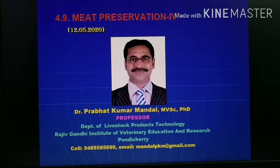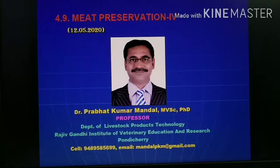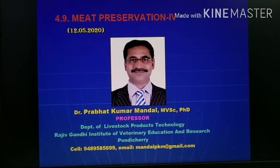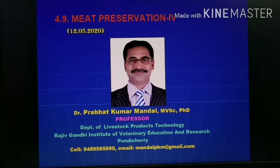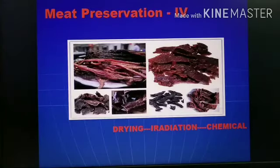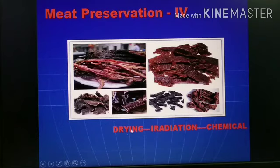Hello dear students, once again welcome to meat science class. Today we have Part 4 of meat preservation, the last part of this series of meat preservation lectures. In Part 4 we are going to talk about three different methods of preservation: one is drying, another is irradiation, and another is the chemical method of preservation.